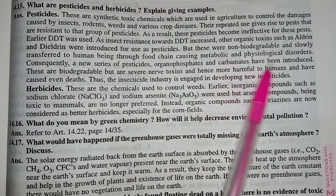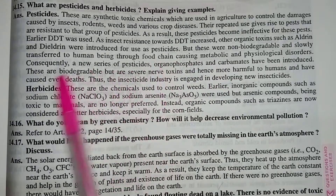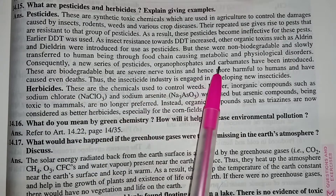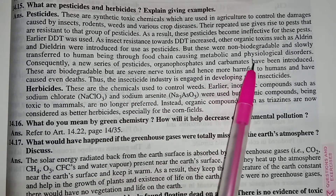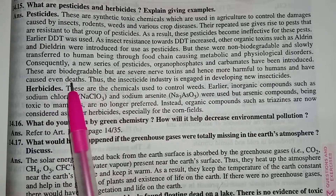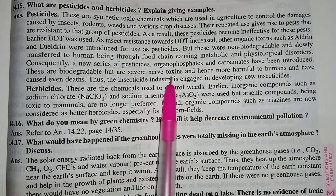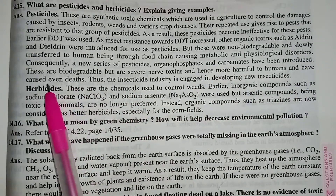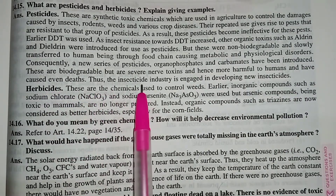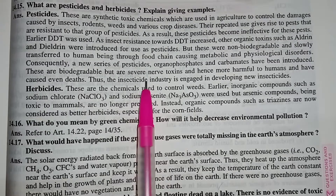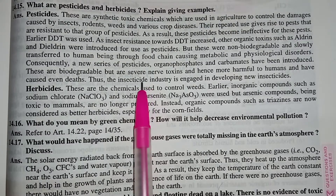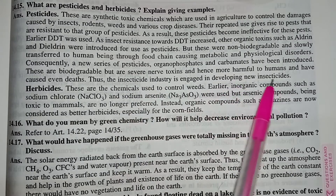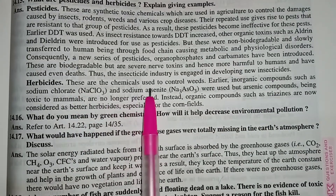Aldrin and dieldrin were non-biodegradable and slowly transferred to human beings through the food chain, causing metabolic and physiological disorders. Consequently, a new series of pesticides — organophosphates and carbamates — have been introduced. These are biodegradable but are severe nerve toxins and hence more harmful to humans, having caused even death. That is why the insecticide industry is engaged in developing new insecticides.